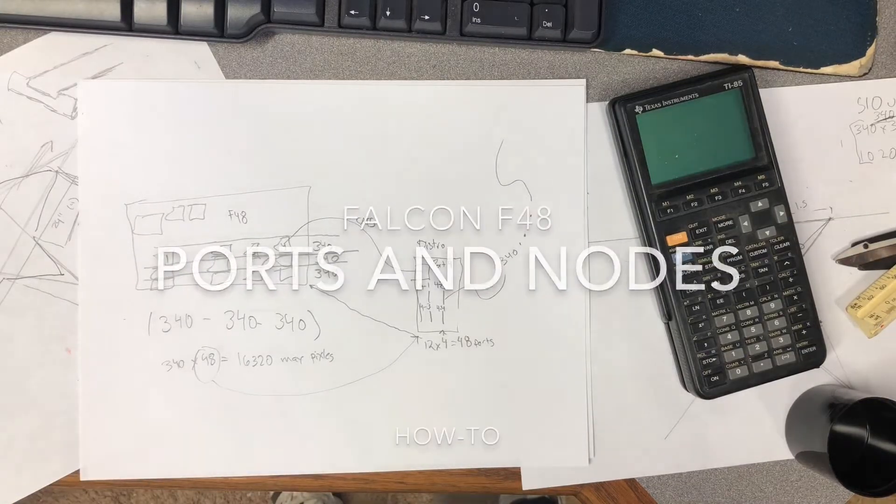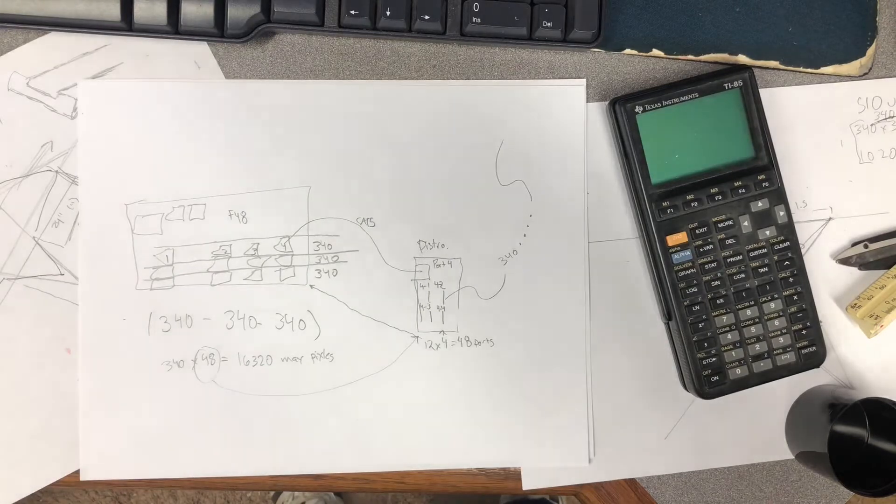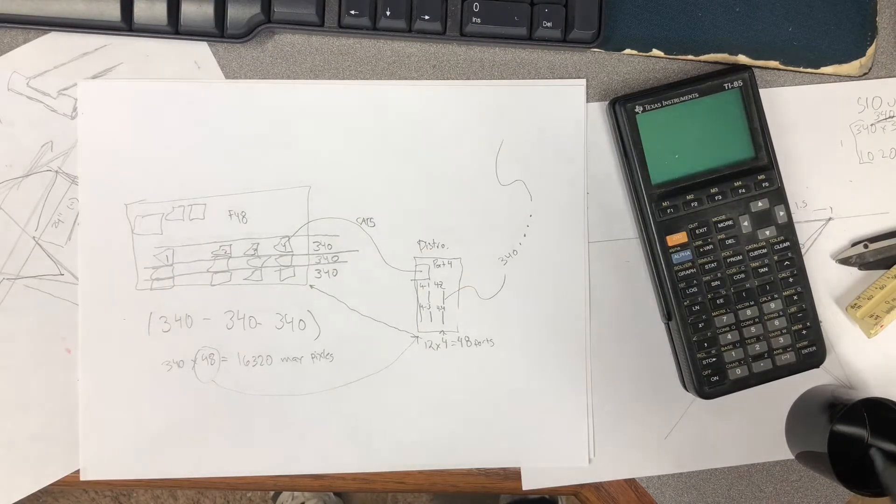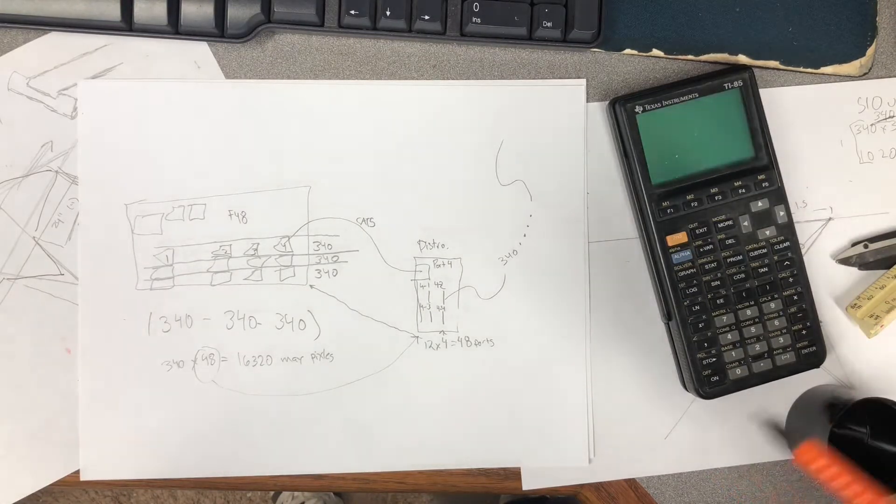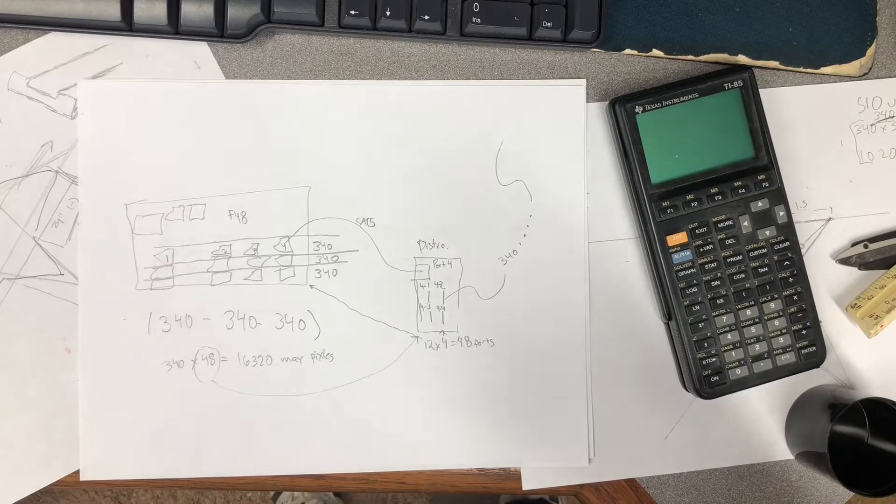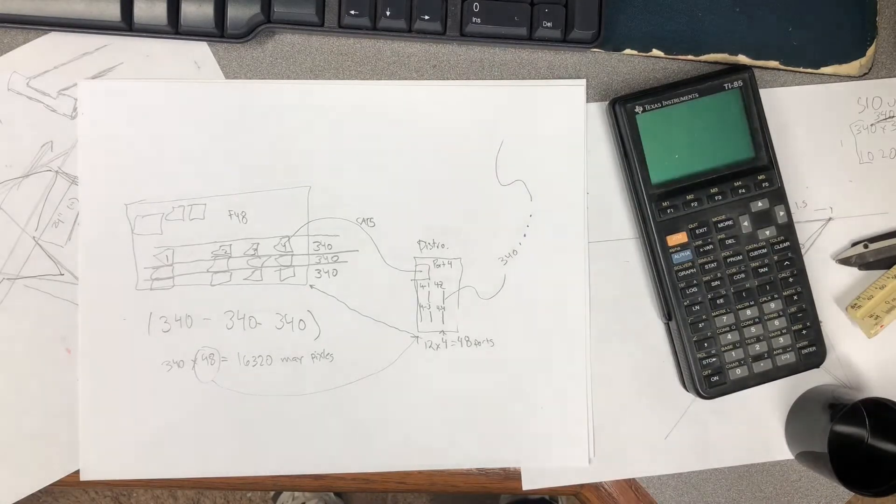Hey there, so I see a question asked a lot about the F48 and some confusion around how to deal with the pixels, how to deal with the sliders, things like that. Here's a quick little FYI.